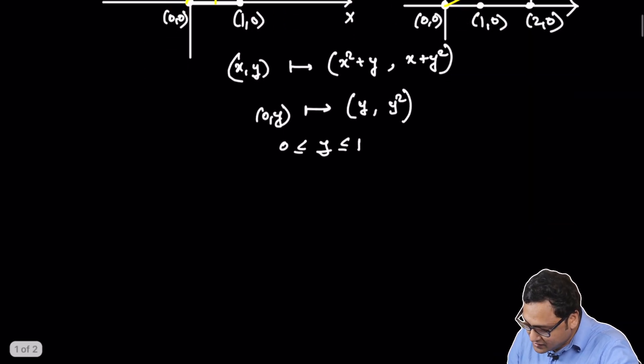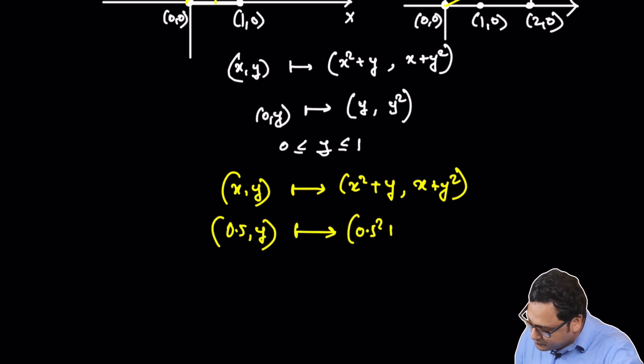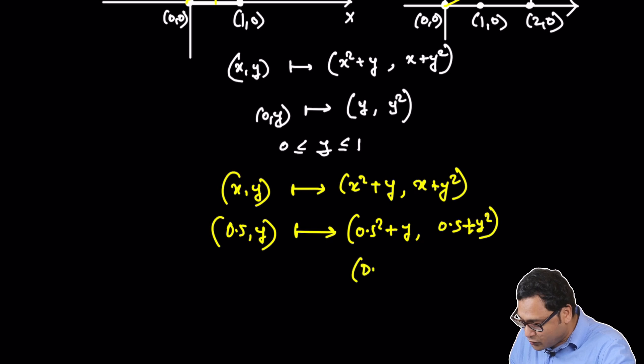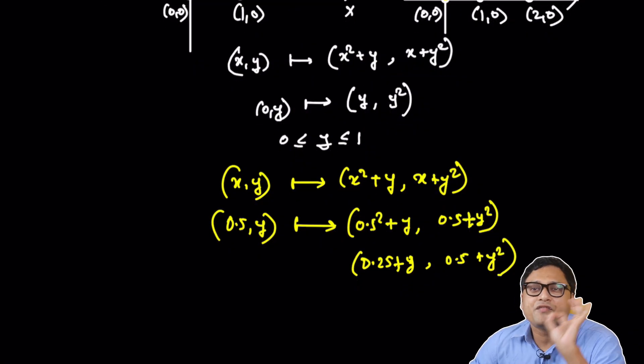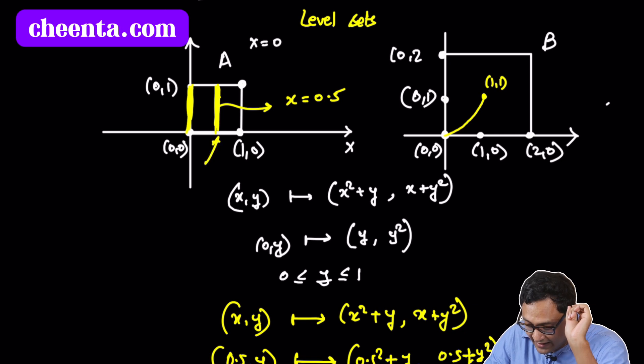So this is x comma y goes to x squared plus y comma x plus y squared. Now we have x is 0.5. So 0.5 comma y goes to 0.5 squared plus y comma 0.5 plus y squared. So now that we have this, this is 0.25 plus y comma 0.5 plus y squared. Can any of you tell me what would be the image of this particular line segment?